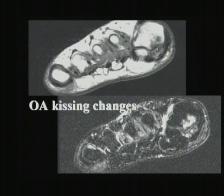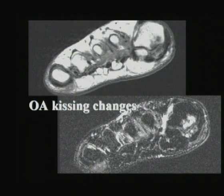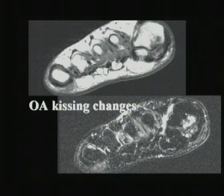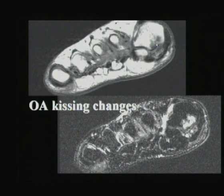Here is another important point about the sesamoids. The fibular sesamoid shows little to no normal marrow signal on T1, suggesting AVN or severe marrow edema, confirmed by marrow edema on inversion recovery. What makes this diagnosis is the kissing changes in the adjacent metatarsal head. The majority of mistakes I've seen in the sesamoids is over-calling a sesamoid disorder that is really articular disease — and all this is is articular disease, confirmed by the kissing changes.